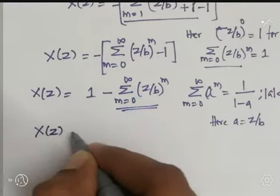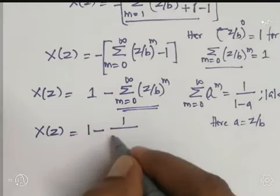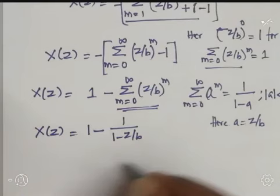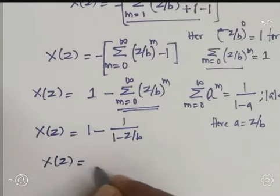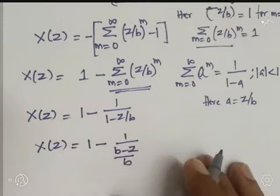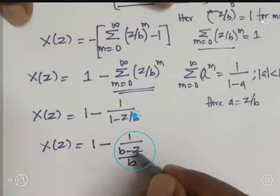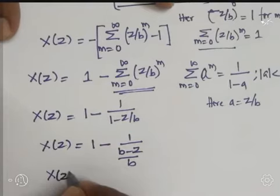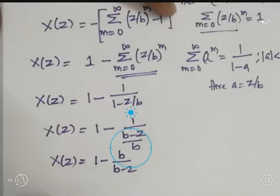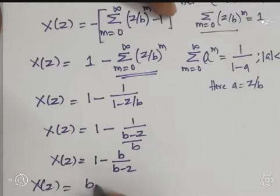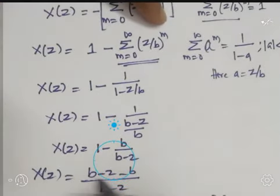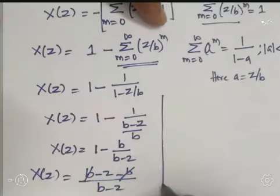Simplifying: X(Z) = 1 − 1/(1 − Z/B). The LCM is B, so X(Z) = 1 − 1/[(B−Z)/B] = 1 − B/(B−Z). The LCM is (B−Z), giving X(Z) = (B−Z−B)/(B−Z).